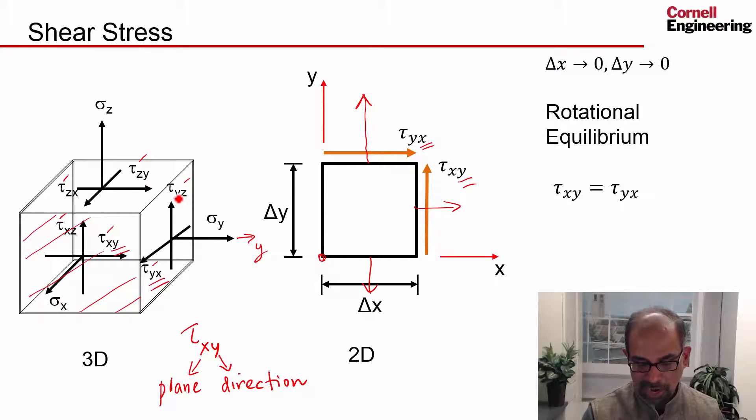Similarly, for tau yz, you would say tau yz equals tau zy, and so on. So this would be equal to that. This is a big simplification because now you go from six shears to three shears.